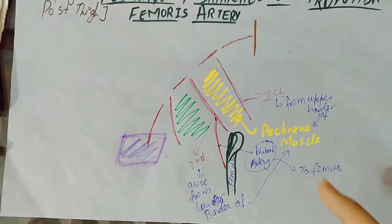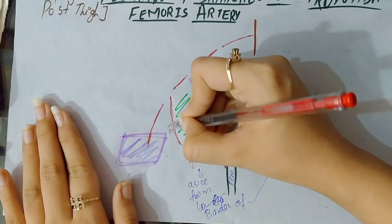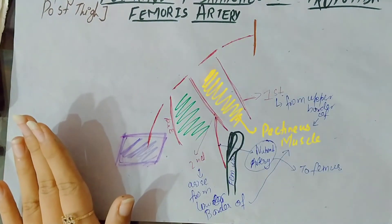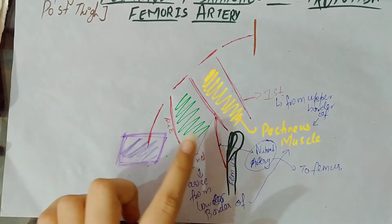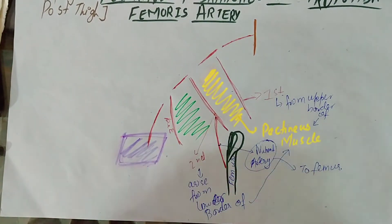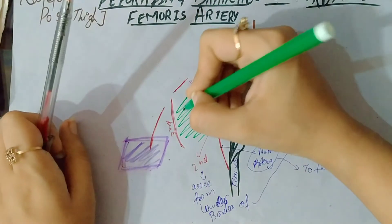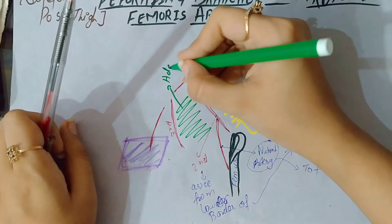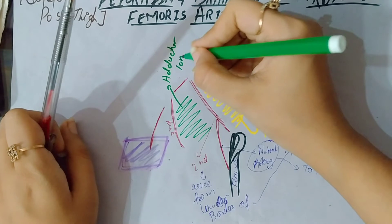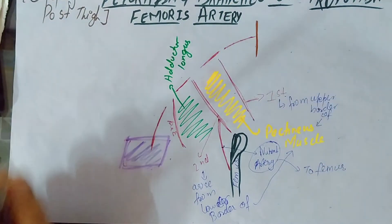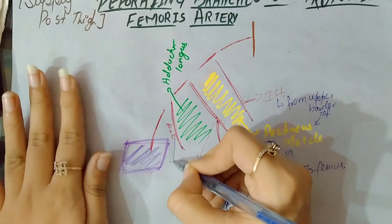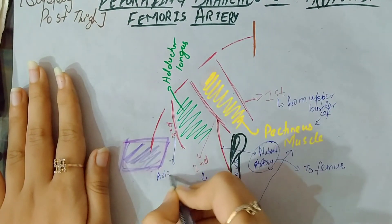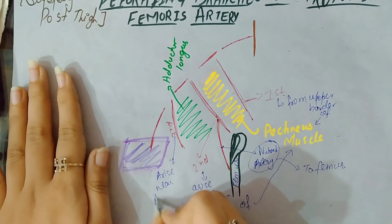The third perforating artery — this one is the third — arises above the adductor longus muscle. This one here is the adductor longus muscle. So the third perforating branch arises near the adductor longus muscle.